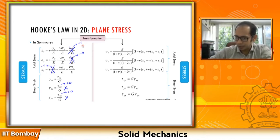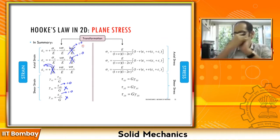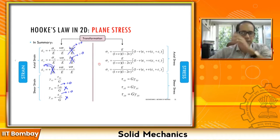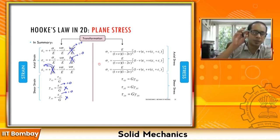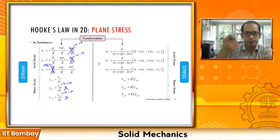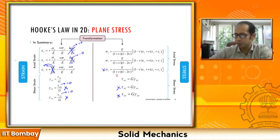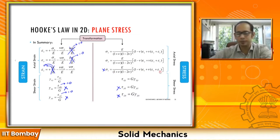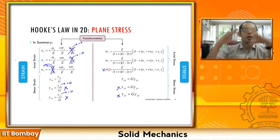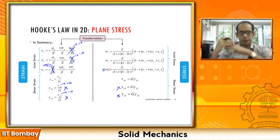Note that epsilon z is not equal to zero — it is the sigma z term inside the equations that vanishes. The strains become simplified. When you substitute back and do the transformations, you find that the sigma z, tau yz, and tau xz components disappear from the expressions. You can try that exercise yourself and verify.